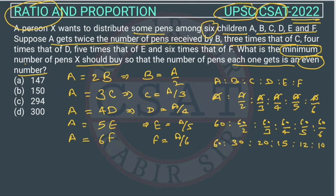This is the ratio between A, B, C, D, E, F. Now we have to find out the minimum number of pens. The total of this will be 60 plus 30 plus 20 plus 15 plus 12 plus 10 equal to 147. So the minimum number of pens will be equal to its total, that is 147.